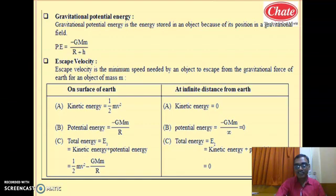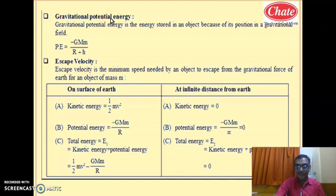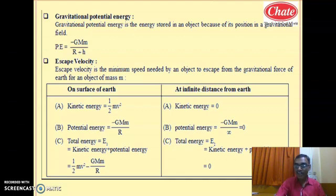You know that as height increases, potential energy increases. We apply the similar concept while studying gravitational potential energy. But what happens is that as height increases, g decreases. If we consider a very large — infinite — height, then at infinite height acceleration due to gravity becomes zero. So in your potential energy formula mgh, height is very large, but at the same time g becomes zero because acceleration due to gravity goes on decreasing as distance increases.